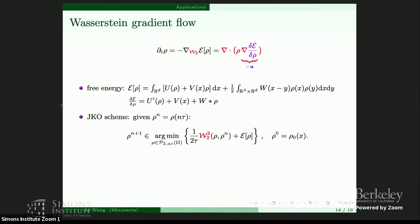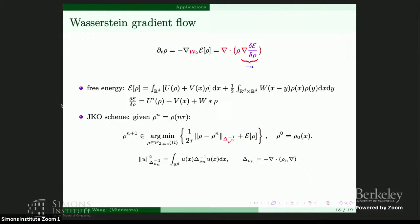The JKO scheme: given the density at time t_n, you obtain the density at the next time step by solving a minimization problem. The objective function has two terms: the Wasserstein-2 distance to the previous density weighted by 1/(2 tau), and the energy term. In our case, we are not going to solve this Wasserstein distance exactly; instead, we approximate it by a weighted H^{-1} norm. The rationale is that the JKO scheme is already a first-order approximation to the Wasserstein gradient flow, so we can allow a little bit of approximation for the Wasserstein distance.